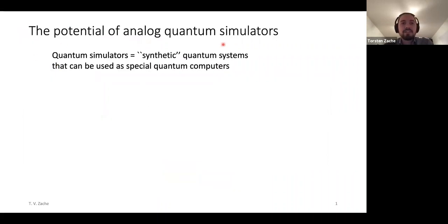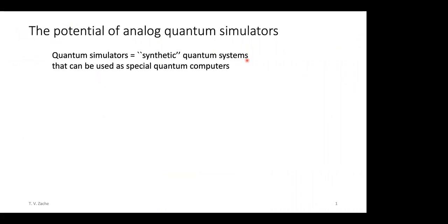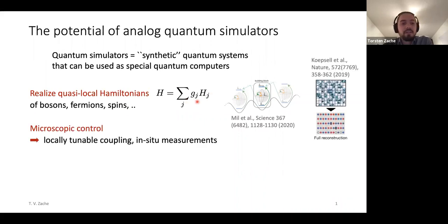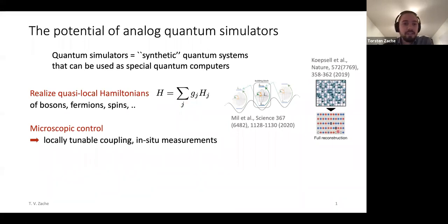Let me start with an idea of what I think is the potential of analog quantum simulators — synthetic quantum systems that mimic other systems of interest by realizing Hamiltonians that can be probed. Because of this property to realize a certain set of quasi-local Hamiltonians — sums of local operators with coefficients involving degrees of freedom: bosons, fermions, spins — and because of the possibility to tune these systems by locally changing couplings, but also making in situ measurements of the full system, for instance in quantum gas microscopy and Fermi-Hubbard systems, one can measure single-site resolved pictures of atoms, even spin and density resolved. These systems can be much more than just systems that mimic others; we can think of them as a special type of quantum computer that runs programs described by quasi-local Hamiltonians.